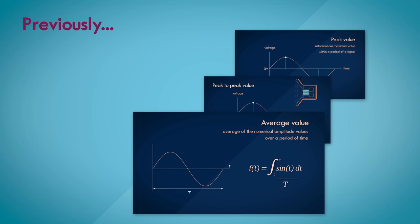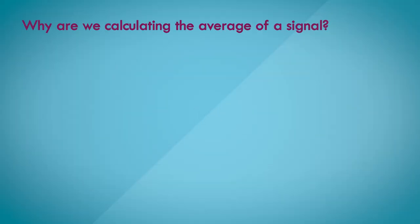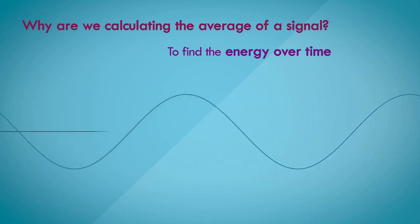Though we looked at a simple average calculation of a sinusoid in the earlier video, that isn't how the effective average of a signal is calculated. The reason for this is basically dependent on what we are trying to find when calculating the average. A very important aspect of a signal is the energy that it carries over time. That's the power of the signal within a given period of time.